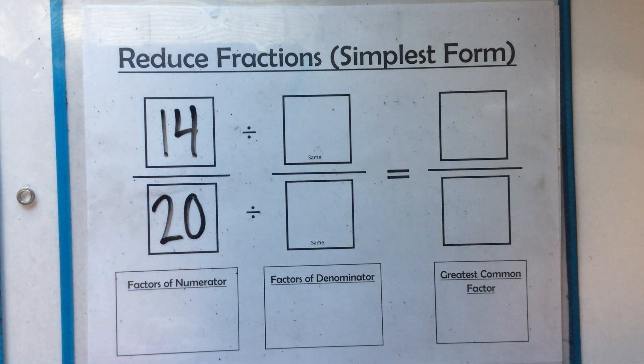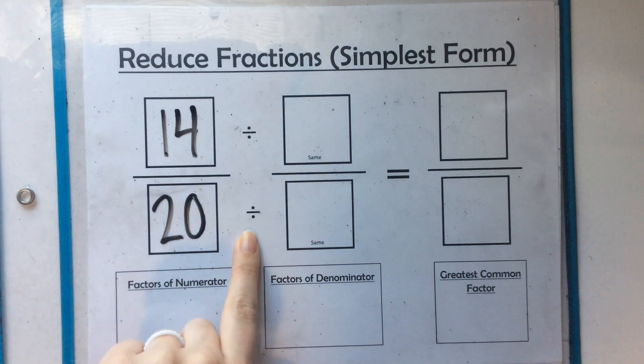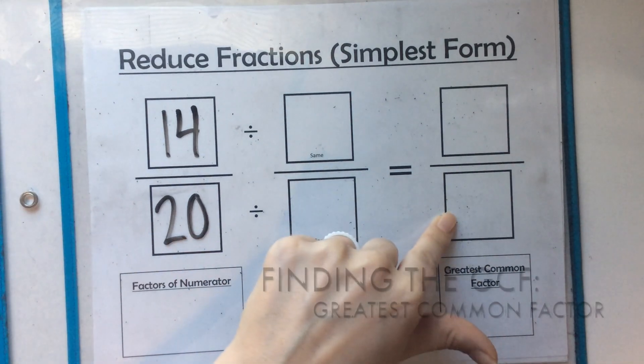Those are two pretty big numbers, right? We can definitely make those numbers smaller. So what we need to think about is what can 14 and 20 both be divided by to get it to its simplest form?